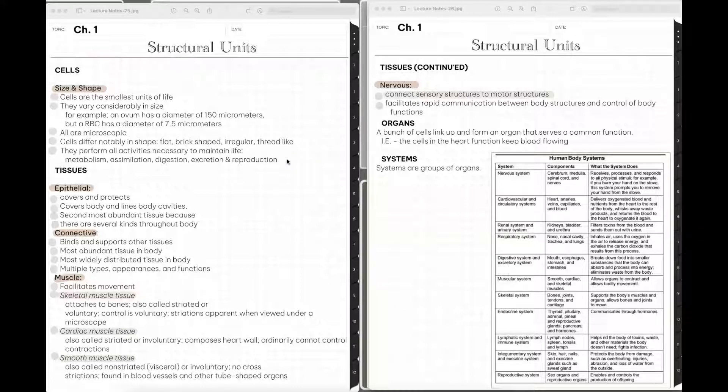And there are several different types of tissues as well that you need to know about. So epithelial tissues cover and their function or their job, their primary role is to cover and protect parts of the body. They typically cover the body and line the inside of the body cavities. They are the second most abundant tissue and that is because there are several kinds of them throughout the body.